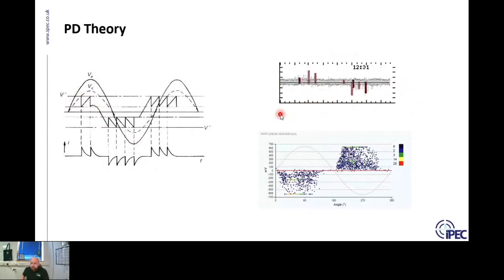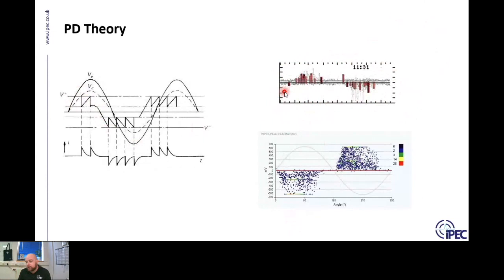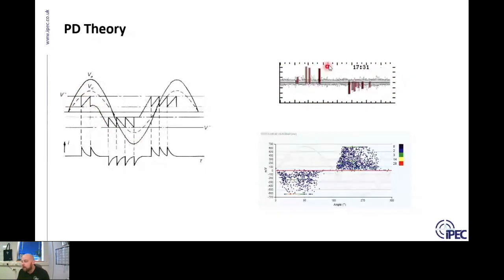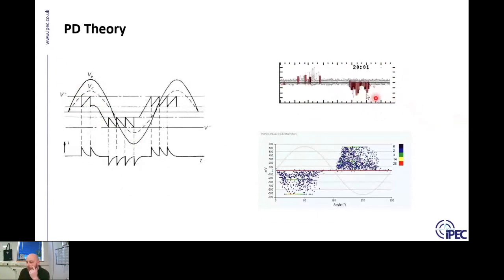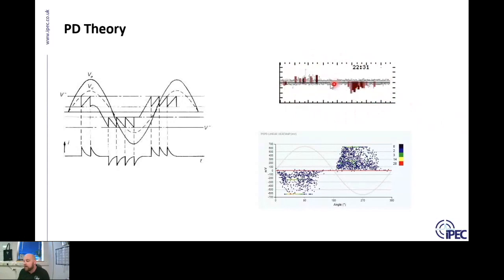This animated GIF from our monitoring system shows each bar as a highlighted point of potential partial discharge against background noise. As energy in the power cycle increases, PD occurs; crossing zero and increasing on the negative side, PD occurs again. We get these typical PRPD phase resolved partial discharge patterns with 180-degree shifts in PD activity across the power cycle.